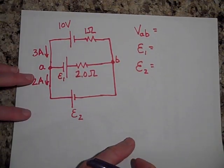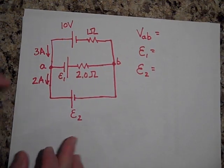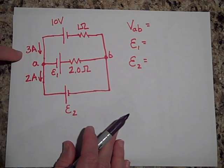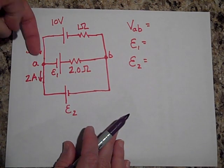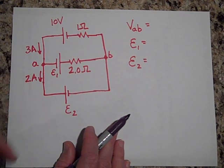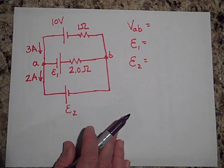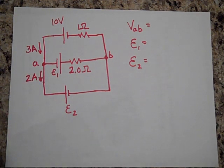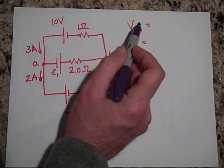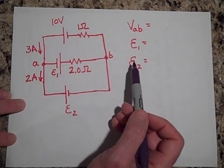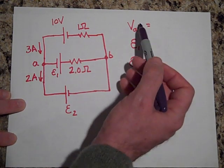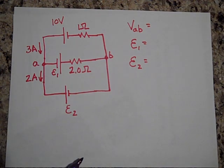Next we have a triple battery circuit. We have a 10-volt battery, 3 amps going down this way, 2 amps going this way, a 2-ohm and 1-ohm resistor, and the unknowns E1 and E2. Try solving for E2 first, then E1, then the voltage at point A with respect to point B.